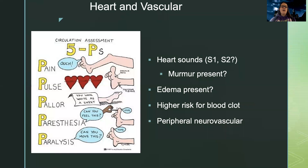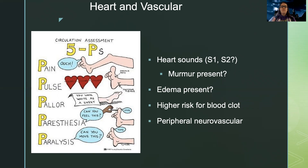We also want to take a close look at the heart and vascular system — the heart and the blood vessels. We want to listen to heart sounds, look for dysrhythmias on an EKG, and check for any edema. These patients are at high risk for heart failure and also high risk for blood clots, so we want to be looking for signs and symptoms of those. A good peripheral neurovascular assessment is important, as there can be decreased perfusion or decreased blood flow especially to the hands and feet.